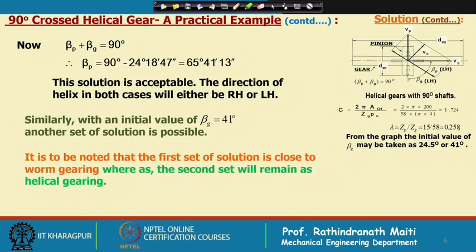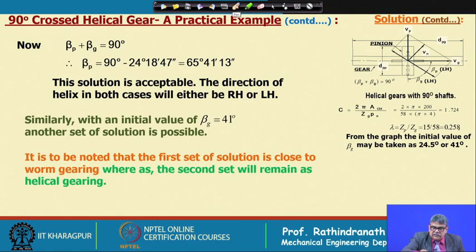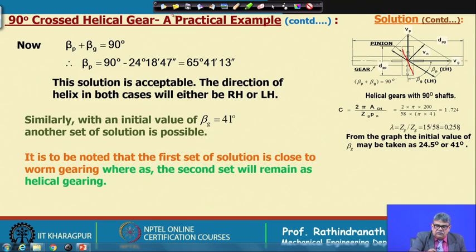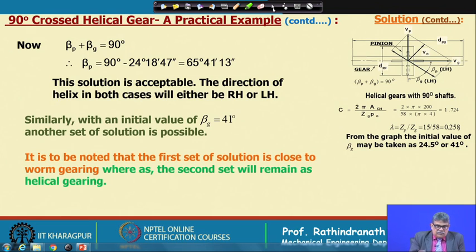Strength-based design of both gear sets is required to decide which solution to adopt. The first solution set is close to worm gearing since β_p is very large. If β_p ≈ 65°, the pinion thread configuration approaches a worm. The second set (initial β_g ≈ 41°) will remain as a helical gear; it is very difficult for that set to approach worm gearing. Next we discuss how crossed helical gearing transforms into worm gearing.